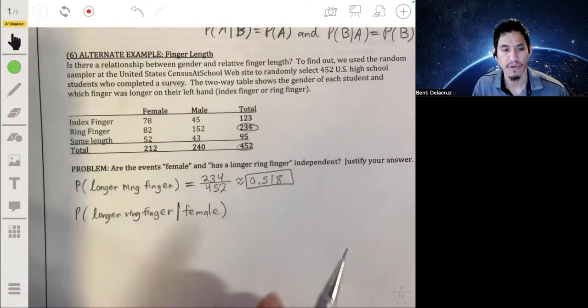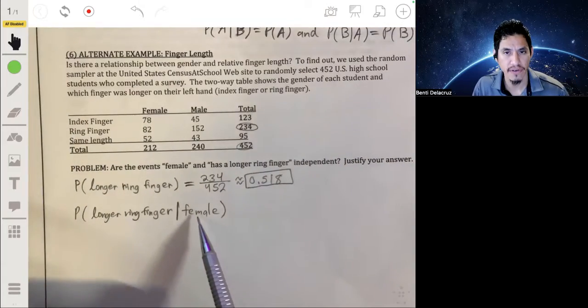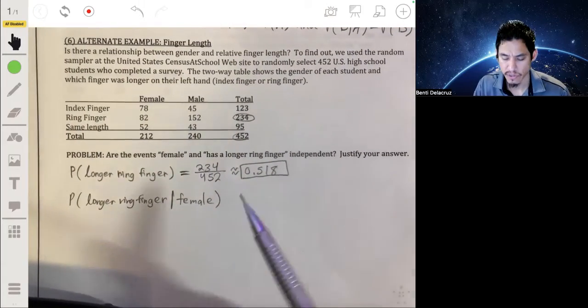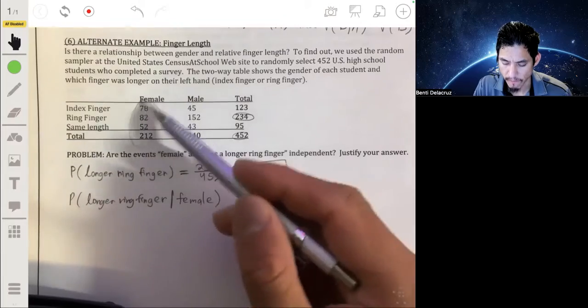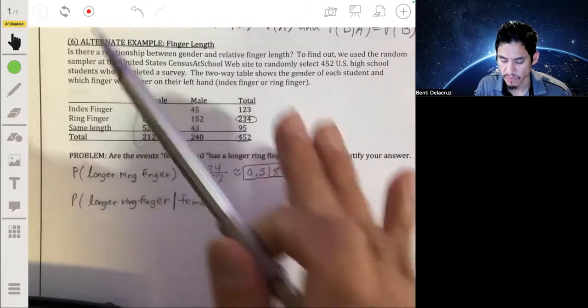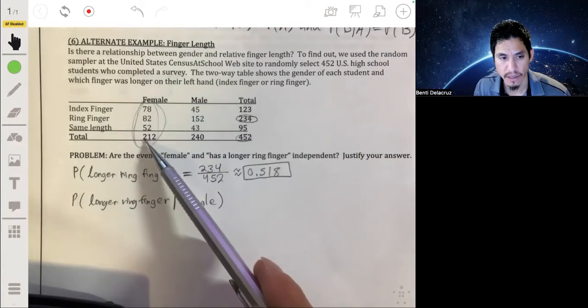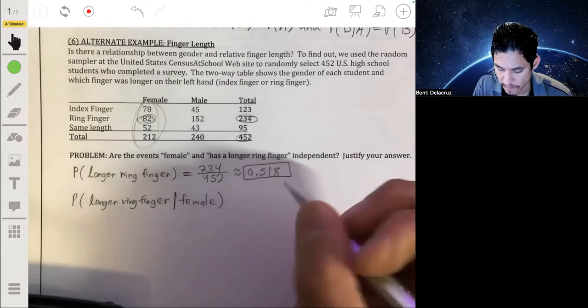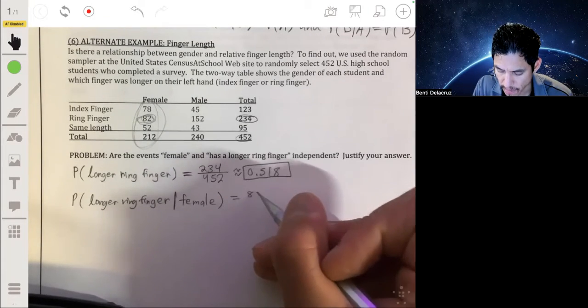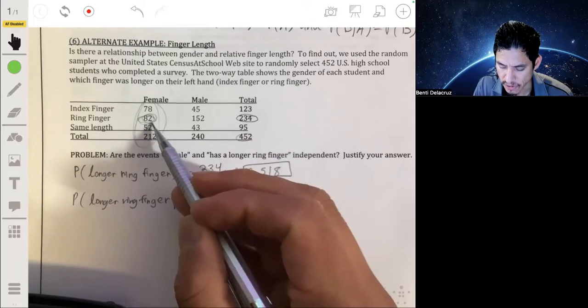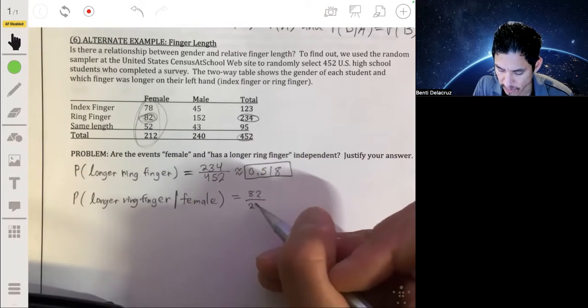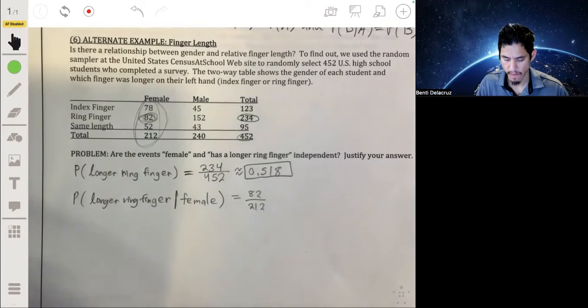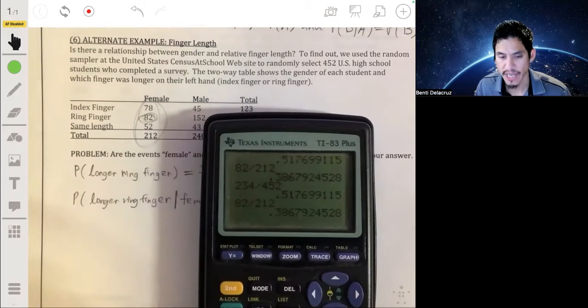Okay, so now let's see. What's the probability of having a longer ring finger given that you're female? So we only care about the females now. We don't care about these guys. So we now look at just this column and look at what proportion have a longer ring finger. So we're going to take the 82 of them, 82, and divide by the total number of females, 212. And we get about 0.387.